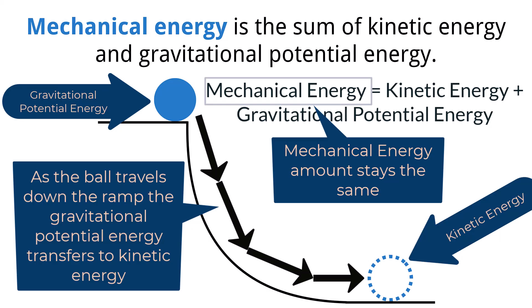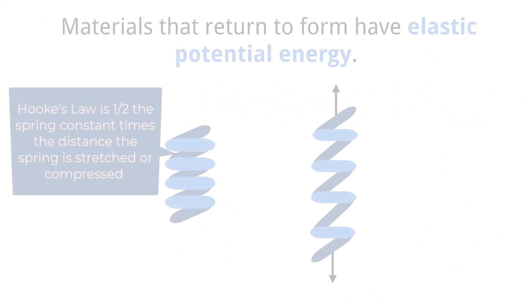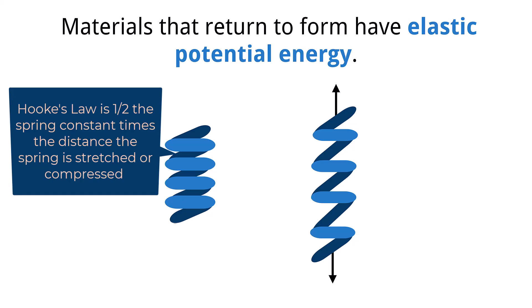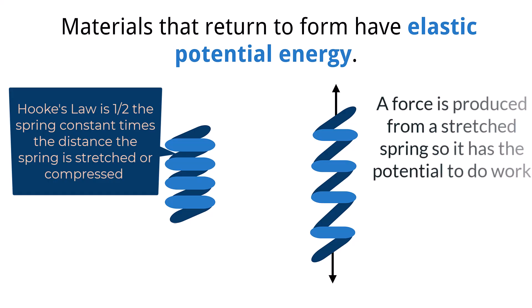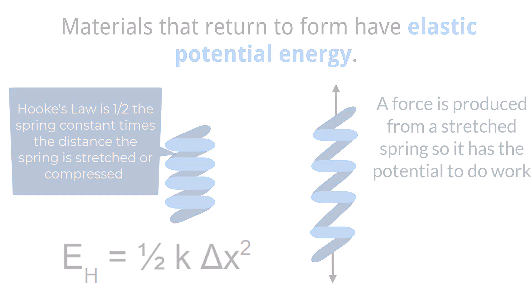Hooke's law shows that the force from an elastic object like a spring is equal to 1 half the spring constant k times the stretched or compressed distance of the object. Since these objects produce a force, it is also considered to store energy. This energy is referred to as elastic potential energy. To solve for the elastic potential energy, we take 1 half the spring constant times the distance the spring is stretched or compressed squared.